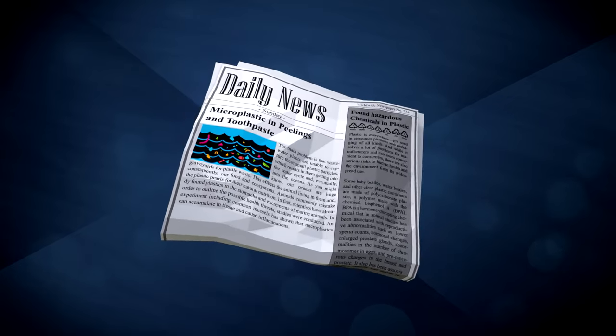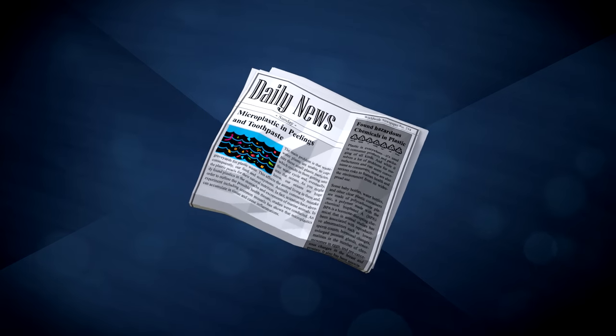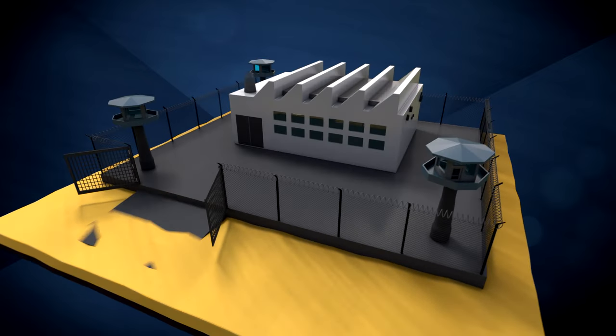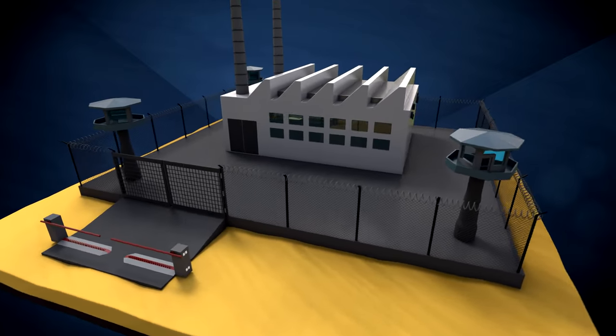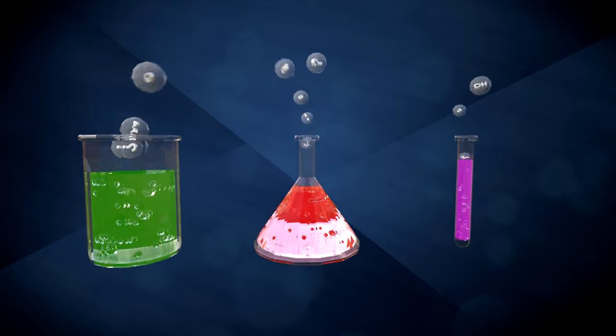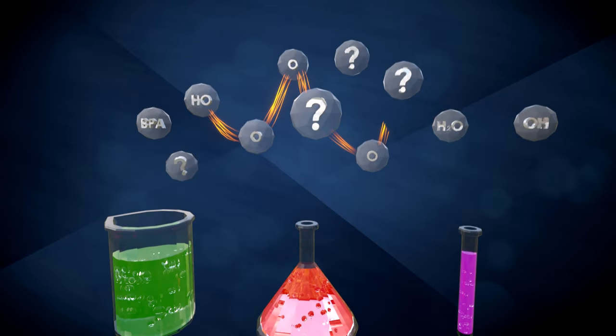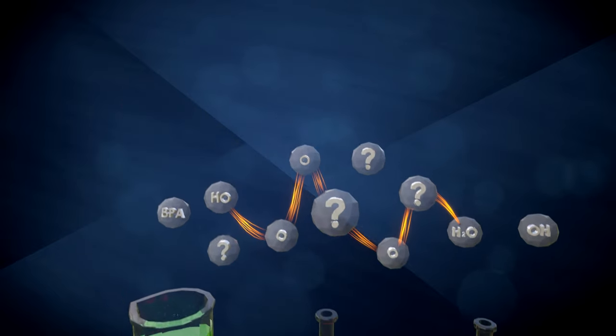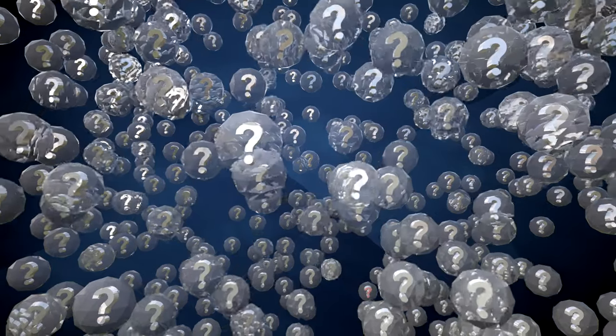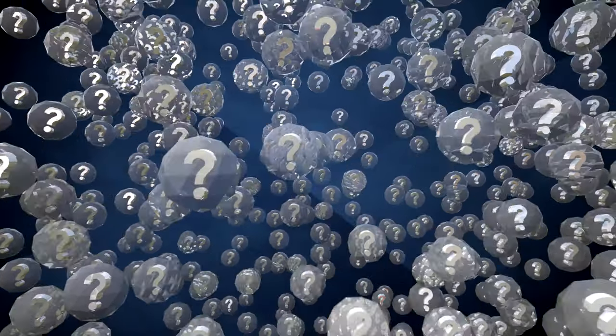The plastic industry tries to cover up any scandals and runs a gigantic lobbying campaign to prevent stricter laws or inquiries. Plastic factories are veritable fortresses. The plastic production processes are tightly kept secret. This is one of the reasons why no one is exactly sure what substances are added to the plastic. Over the course of the last 10 years, only 11 chemical substances could be analyzed out of a total of 100,000 possible additives.